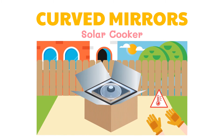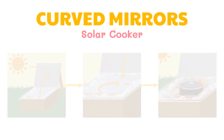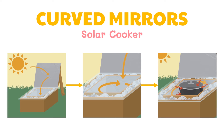A solar cooker can do almost anything a stove or an oven can do. The difference is that it uses a natural, non-polluting, free and abundant energy source. Solar cookers work on the principle that sunlight warms the pot, which is used for cooking the food. This warming of the pot occurs by converting light energy to heat energy. Concave mirrors are used in these types of cookers because these mirrors reflect sunlight to a single focal point.